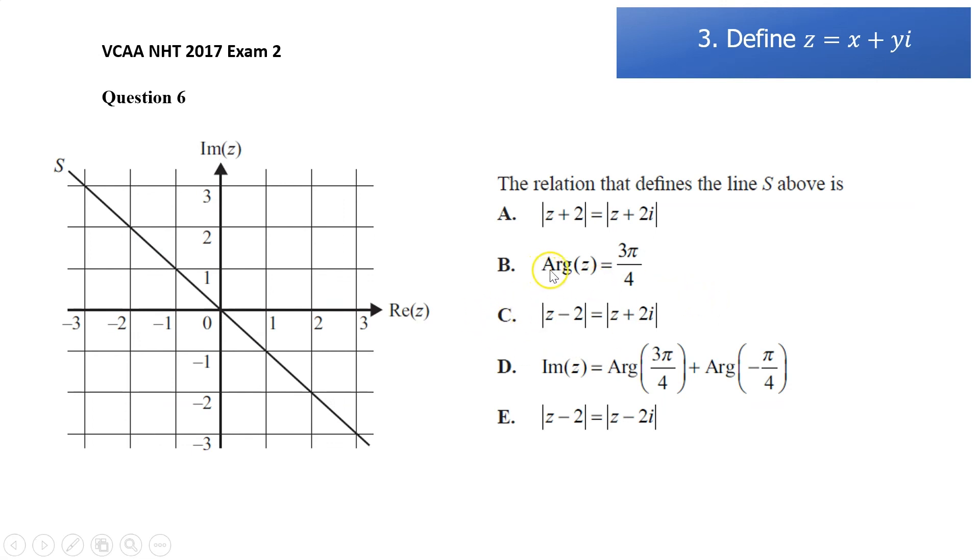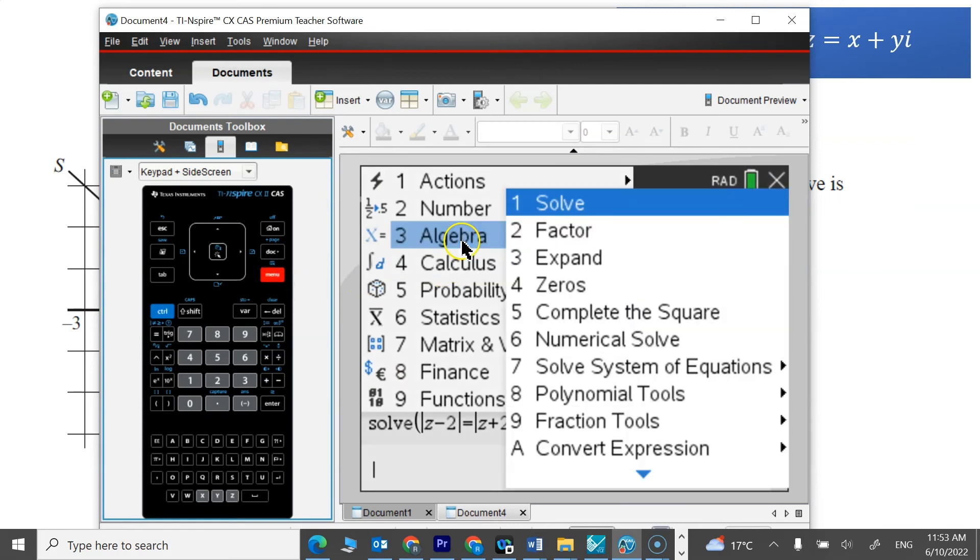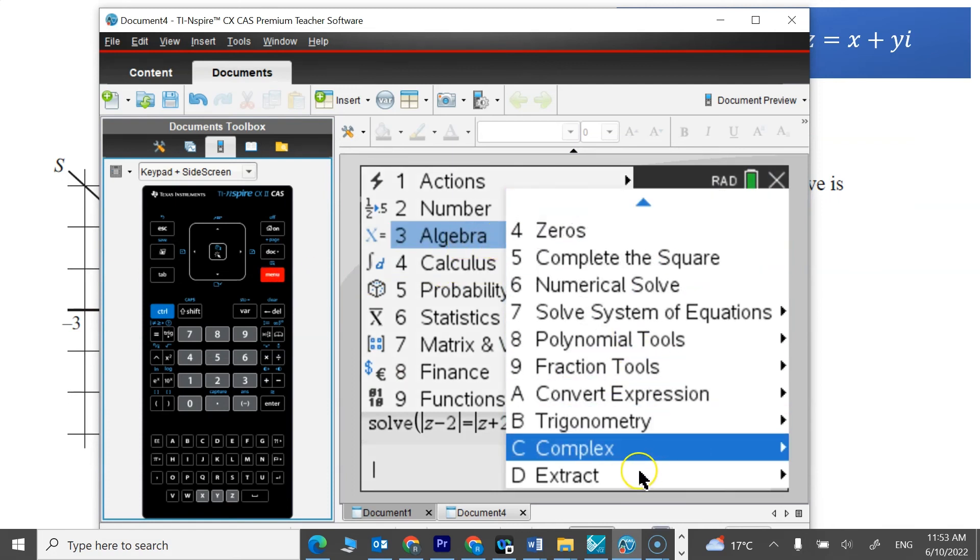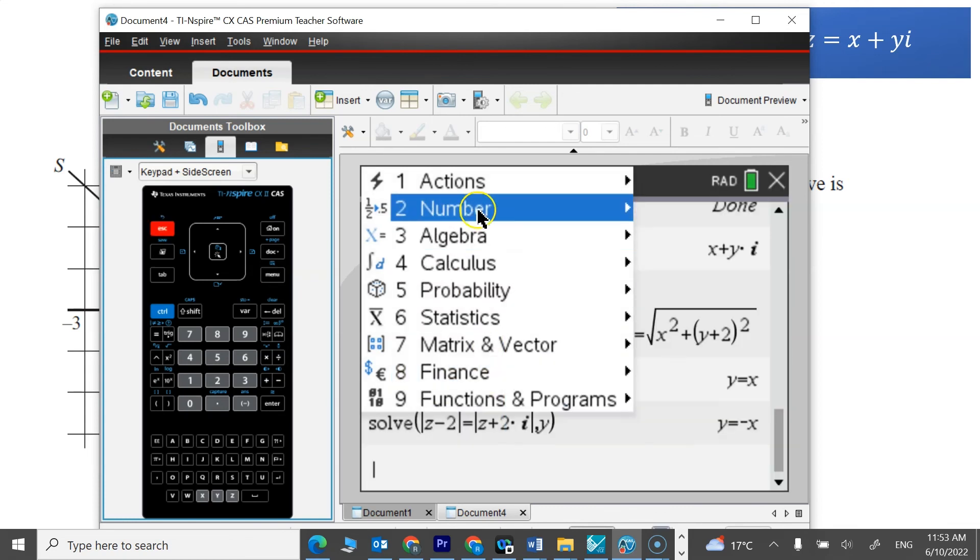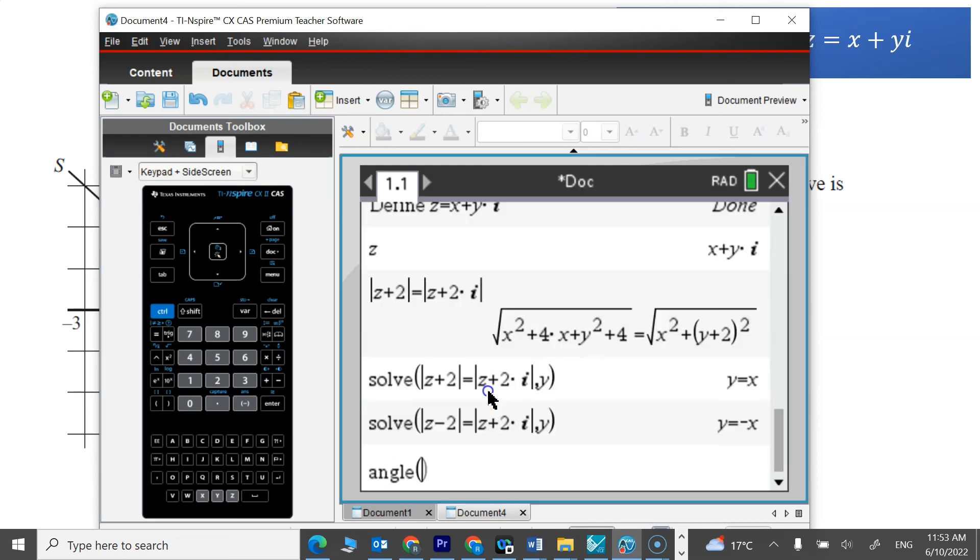Just to show you, like this one, arg z, we can actually do that, if we wanted to check that one, using the angle function. So it's under the menu somewhere. I think it's algebra complex, somewhere. Oh, number, complex number tools, polar angle. So it just gives us angle. We could just type angle. So angle z.